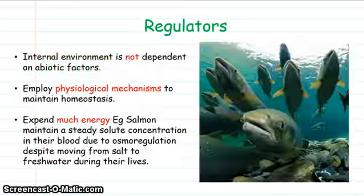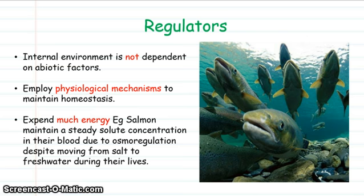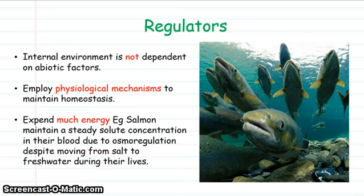Regulators, on the other hand, can shift from environment to environment and their internal environment is not dependent on those abiotic factors. They employ physiological mechanisms to maintain a steady internal environment, and as a result they use a lot of energy in the process. For example, when salmon move from salt water to fresh water, in order to osmoregulate their internal tissues they need to use a lot of energy.